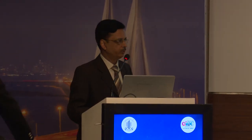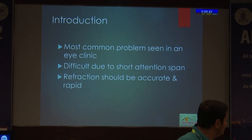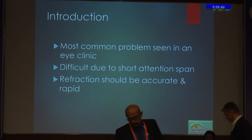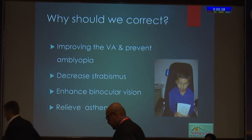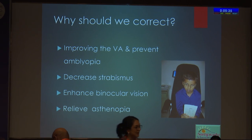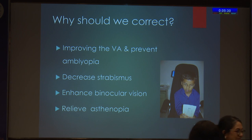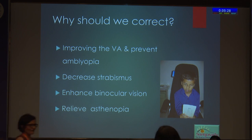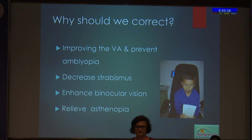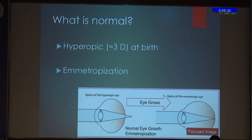I would like to thank Madam for giving me this opportunity. Refractive errors in children — it's actually the most common problem we see. We all know pediatric refraction is not easy because of the uncooperative child. Why at all do we need to correct refractive error? First and foremost is to improve visual acuity, decrease strabismus, enhance binocular vision, and relieve asthenopia.